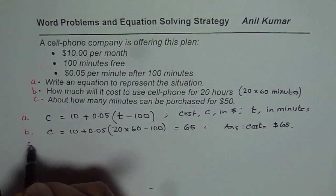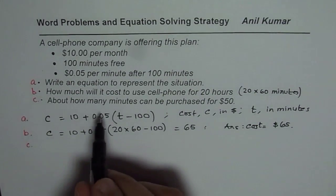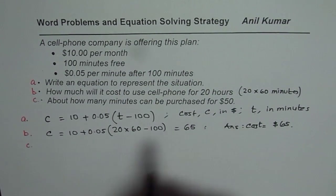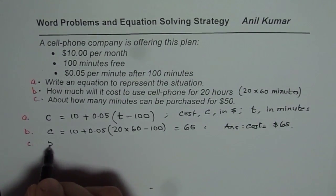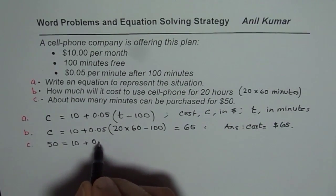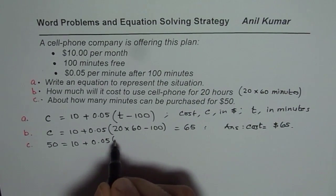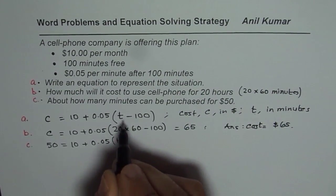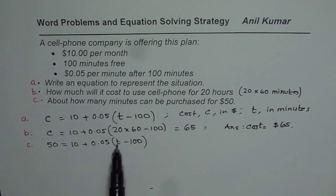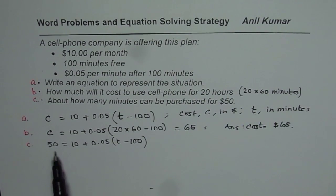Part C is about how many minutes can be purchased for $50. That means we are given the cost here, so cost given to us is 50 dollars, we need to find time. Now to find time, we need to rearrange or isolate the variable. So we need to isolate T to find how much time can be purchased for 50 dollars. So how can we do that? We will follow our steps, that is inverse operation.